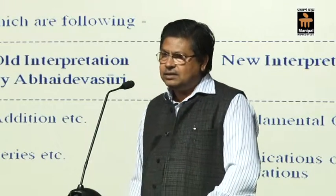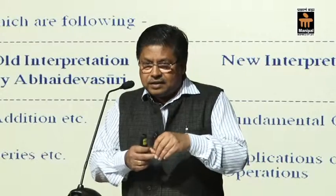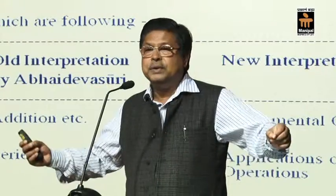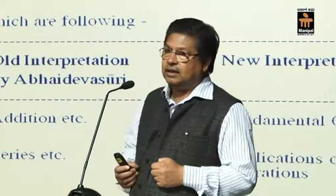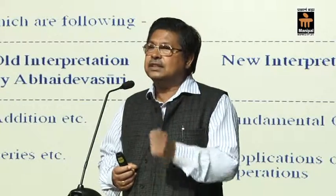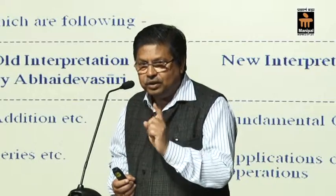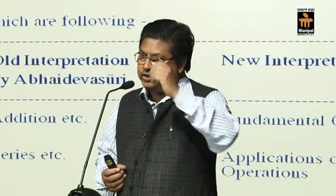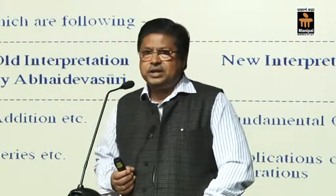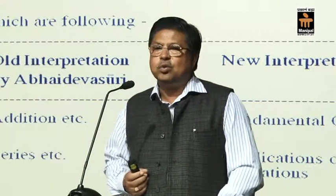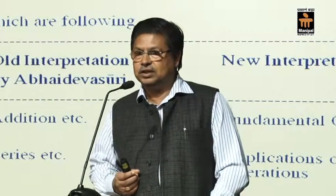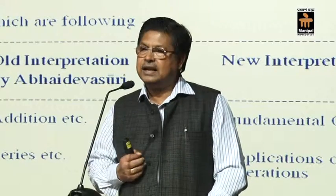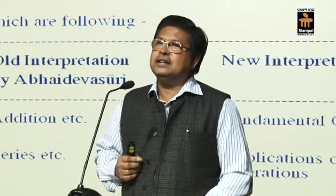Rope is a measurement instrument used to measure things in lawkik ganit, but rajju is a technical term of Jain literature and in fact it is uncountable. A more detailed description regarding rajju is available in 'Cosmology Old and New' by G.R. Jain, which is a commentary of the Tawar Sutra, fourth chapter, published by Bharati Ganpit. It has a very detailed discussion of rajju and it is more appropriate.